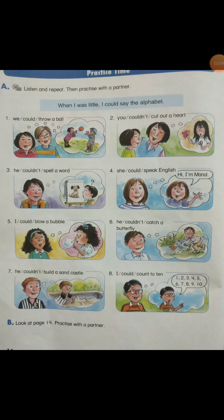Here we will form sentences like the example: When I was little, I would say the alphabet. This is the example. We will form sentences like this. Number one: when we were little, we could throw a ball. Number two: when you were little, you couldn't cut out a heart.